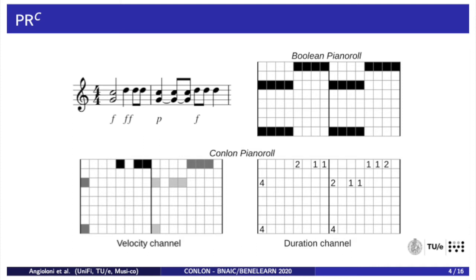Due to this second limitation, the PR description may suffer a fundamental problem when there are imperfections in the reconstructions generated by a trained model. False negatives in the reconstruction may shatter a long note into several shorter ones, which can produce a musically obsessive and unpleasant result. The solution proposed in this paper uses a second channel that explicitly represents note durations as continuous variables. Our PRC description does not suffer the ambiguity between long notes and repeated occurrences of the same note and, except for time quantization, is completely lossless. Additionally, it can be perceptually more robust to reconstruction errors.